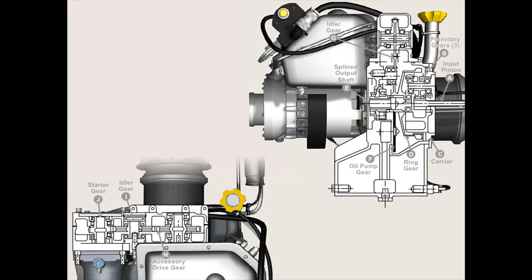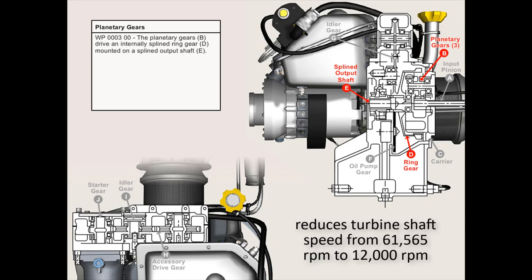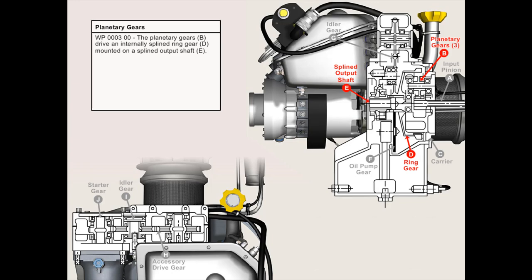A high speed pinion gear and shaft connected to the main rotor shaft provides the input to the reduction gear drive. The pinion is supported by three planetary gears. An internal gear ring installed around the three planetary gears reduces turbine shaft speed from 61,565 RPMs to 1,200 RPMs at the output pad, which also provides a mounting pad for the APU generator. A set of gears extending from the output shaft are used to drive the fuel pump and accelerator and the APU starter mounted on the accessory pads at 4,235 and 8,229 RPM respectively. Other reduction gears drive the lube pump.